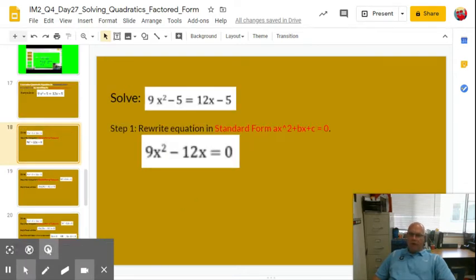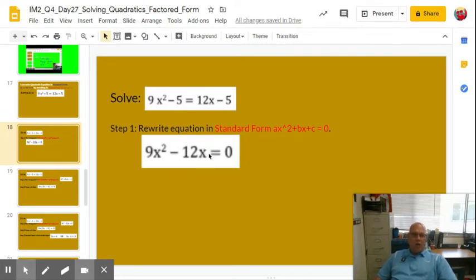Okay, so we rewrote this in standard form. We have 9x² - 12x = 0. There's no c in this case, or c is actually zero in this problem, because when we added five to negative five, it becomes zero. So it's 9x² - 12x = 0.